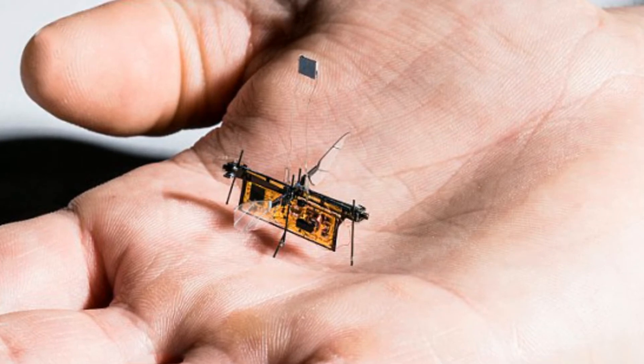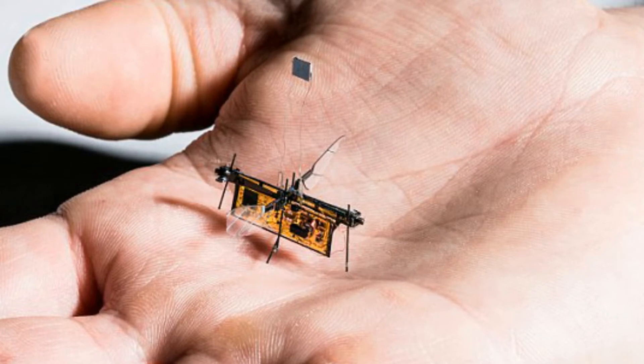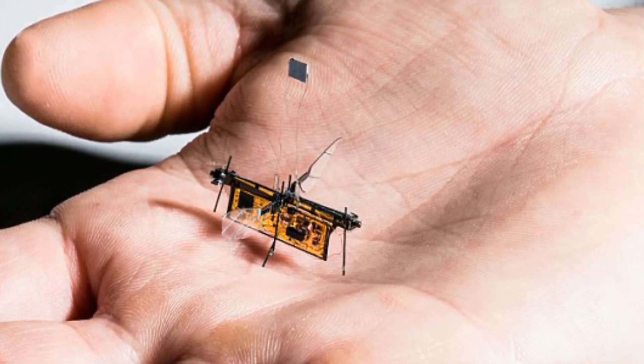Previously, the electronics the insects carried to power and control their wings were too heavy for the robots to fly with, meaning they had to remain connected to a wire.